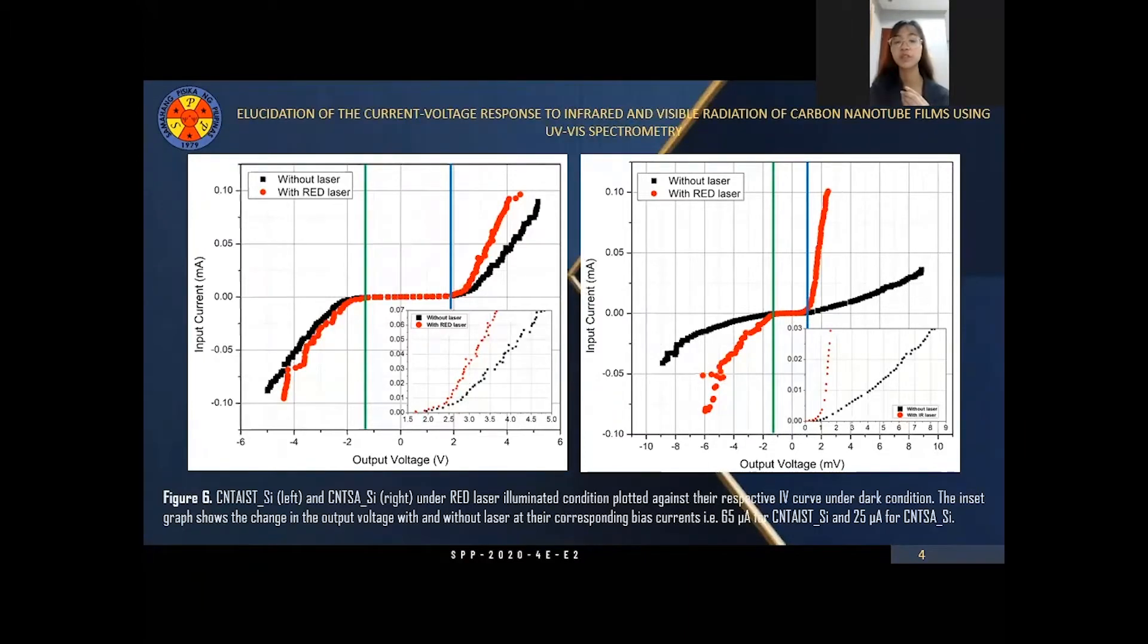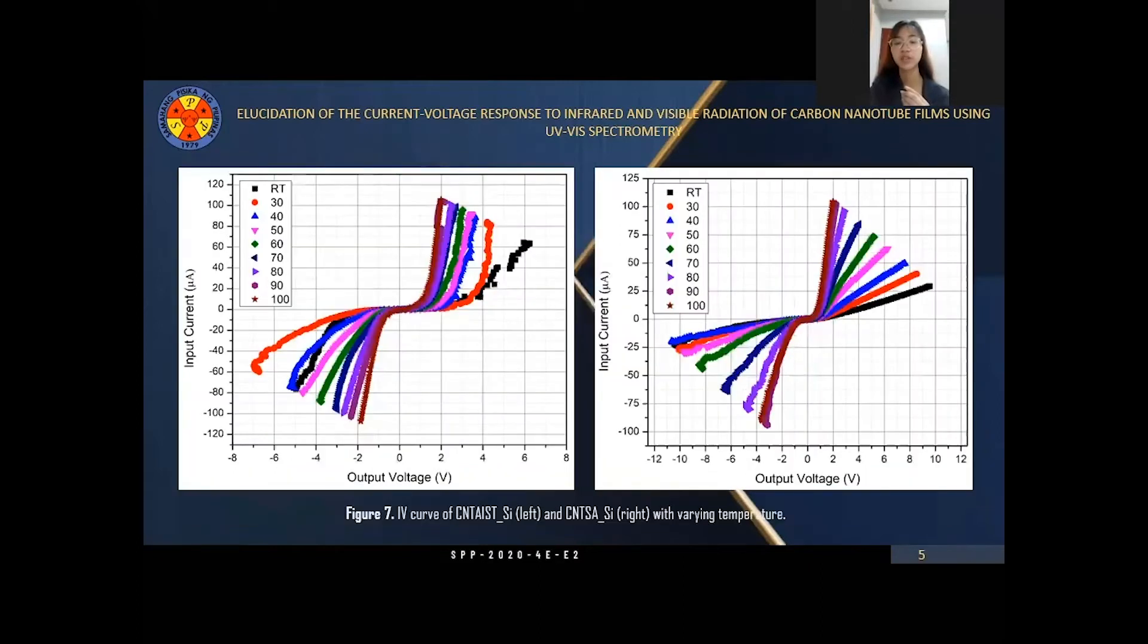Comparatively, the response of device 2, that is its change in resistance and voltage, is higher than that of device 1, making it a more efficient device. The IV versus T curves of device 2 also showed a more consistent and higher voltage change with respect to temperature change as compared to device 1. Hence, we can conclude that device 2 is more semiconducting.